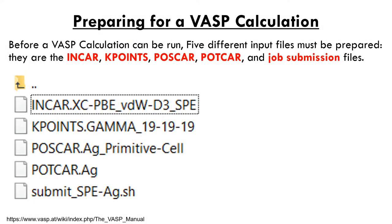Now that we understand what we're trying to do, we can conduct some DFT calculations to obtain the ideal lattice parameter for an FCC crystal. We'll do this using the Vienna Ab Initio Simulation Package, or VASP for short. A VASP calculation needs five input files: the INCAR, KPOINTS, POSCAR, POTCAR, and submission files.